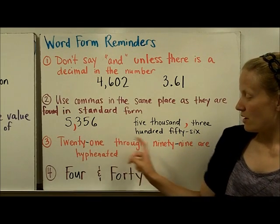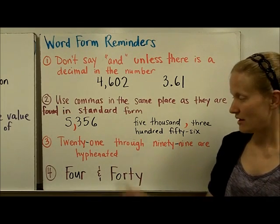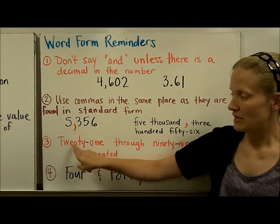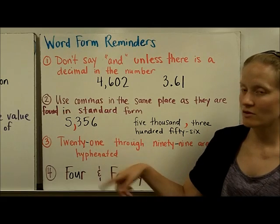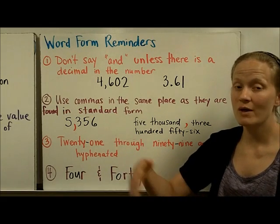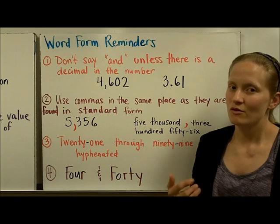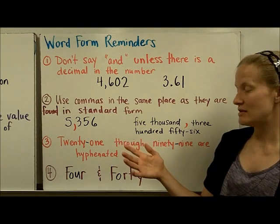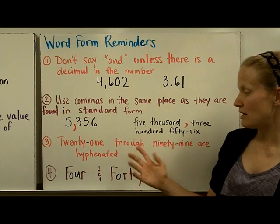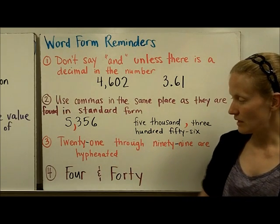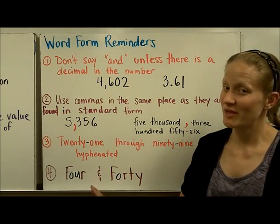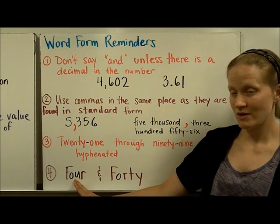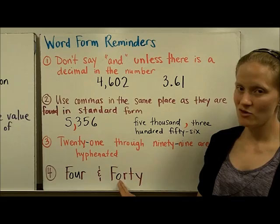The numbers 21 through 99 are hyphenated. And hyphenated is this small line that falls between the tens number and the ones number. So 21, 22, 23, all the way up to 99, except for, of course, 30, 40, 50, 60. But all of the rest of the numbers in between 21 and 99 are hyphenated. And watch out for this spelling mistake that even lots of adults still make: 4 has a U in it, but 40 does not have a U in it.